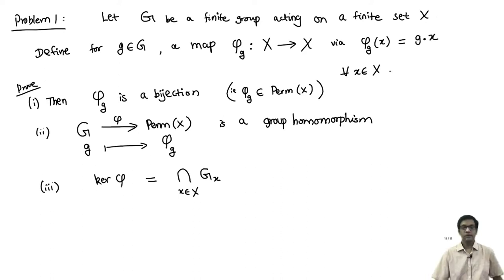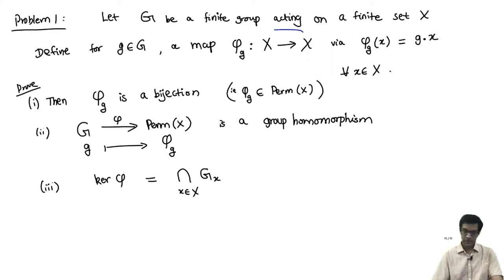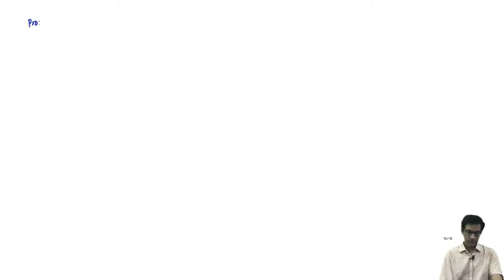You can view this as just being another way of thinking about group actions. Let us prove these statements; each of them is rather easy. Given a group action, I construct maps φ_G defined as above. First, let us prove that φ_{GH}(x) equals the composition φ_G ∘ φ_H of x.